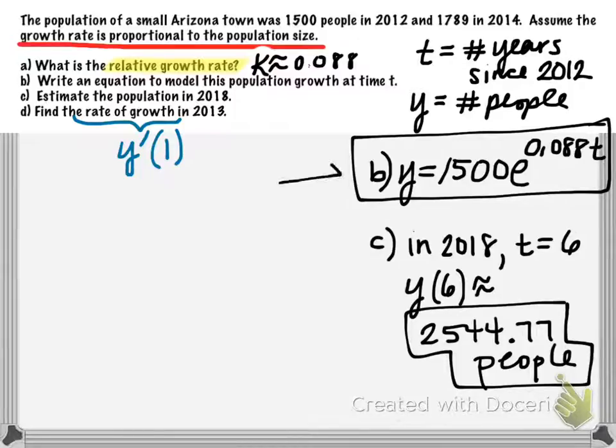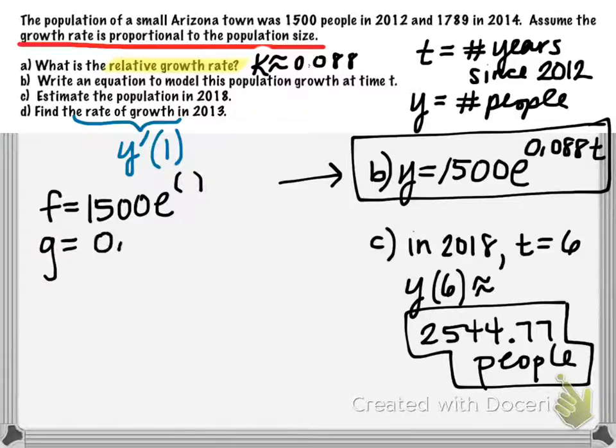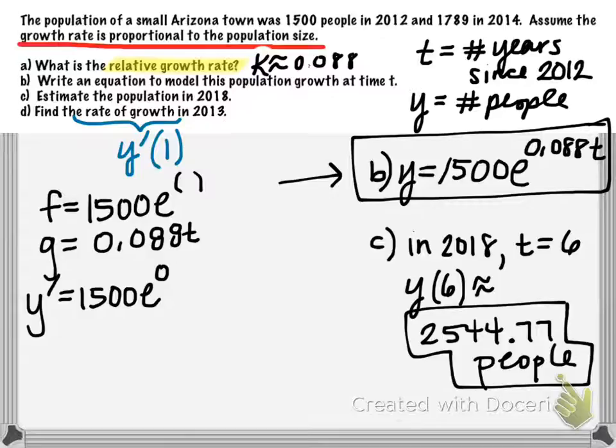So let's go ahead and use our model from part B and let's find Y prime. You'll notice that this model is actually a composite function. So thinking about my outer and my inner pieces, my outer function would be 1,500 E raised to some unknown power. And then my inner function is going to be the exponent, the 0.088 T. So your derivative, Y prime, will be 1,500 E to the something, and your something is the 0.088 T. And then the chain rule says we'll chain on, with multiplication, the derivative of G. In this case, that derivative is 0.088 T.